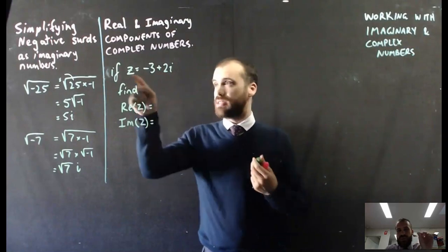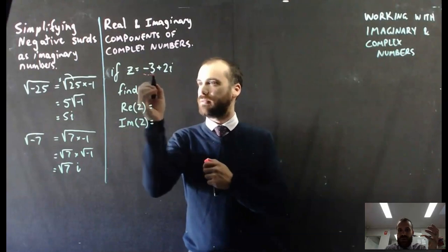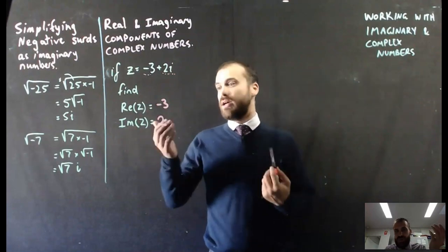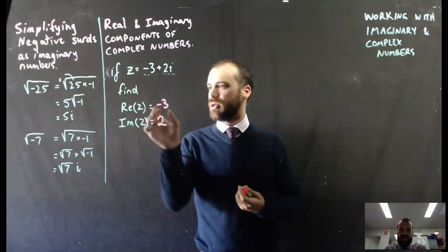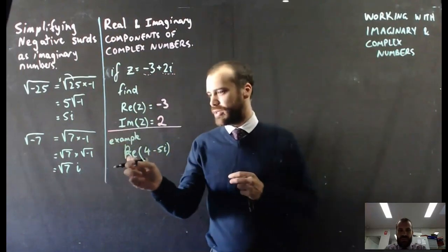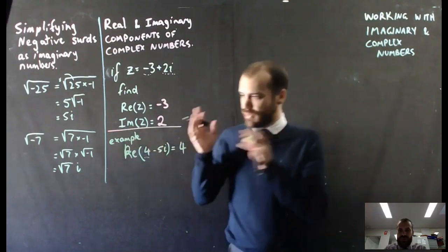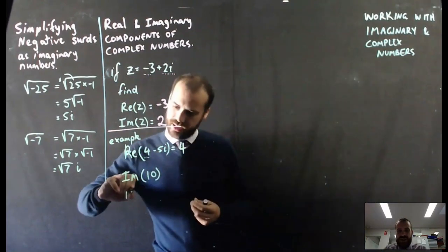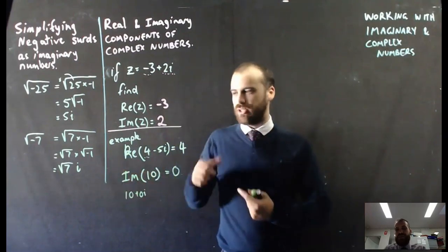This bit is talking about the real and imaginary components of complex numbers. If z equals negative 3 plus 2i, we can find the real component of z, which is negative 3, or the imaginary component of z, which is 2. The imaginary component of z is not 2i — it's just 2. The real component of 4 minus 5i is just 4. And the imaginary component of 10 — that's a trick question. 10 has no imaginary component; that's like 10 plus 0i, so the imaginary component is 0.